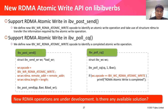How to implement the new RDMA atomic write API on libibverbs. To support RDMA atomic write in ibv_post_send, we defined the new IBV_WR_RDMA_ATOMIC_WRITE opcode to identify an atomic write operation and reuse the existing struct RDMA to transfer the required information. To support RDMA atomic write in ibv_poll_cq, we defined the new IBV_WC_RDMA_ATOMIC_WRITE opcode to identify a completed atomic write operation. Applications post an RDMA atomic write request by ibv_post_send and get its completion by ibv_poll_cq.